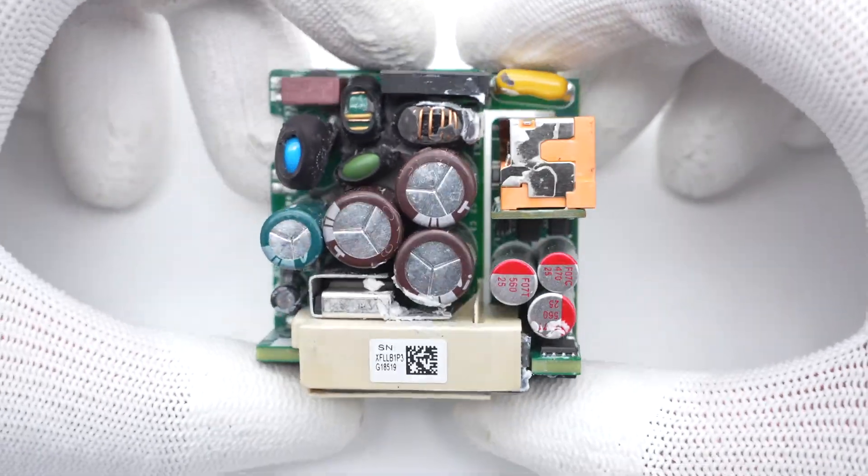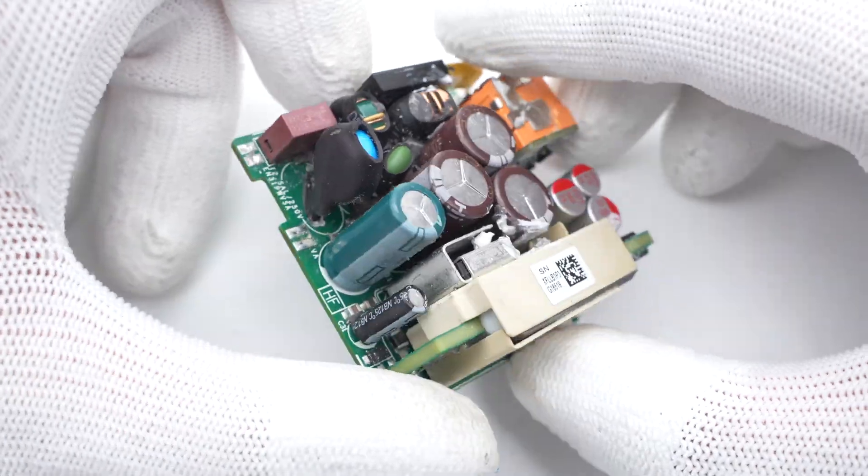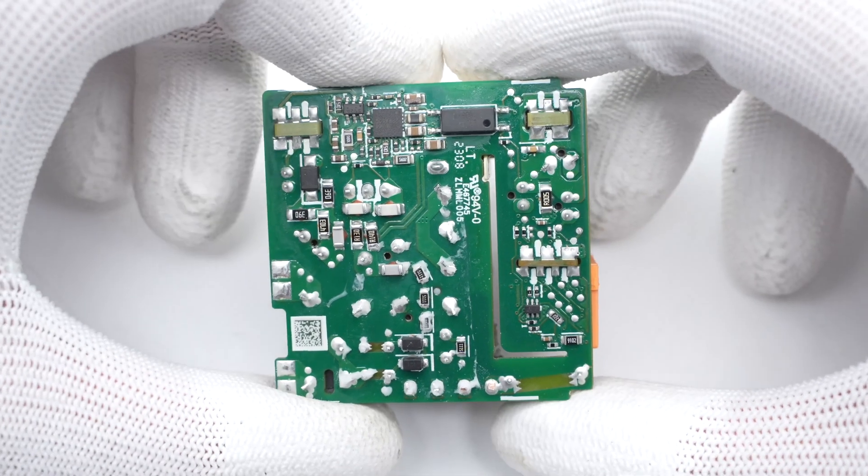ChargerLab found it adopts a planar transformer to make the charger smaller, and the groove can isolate the primary and secondary sides.